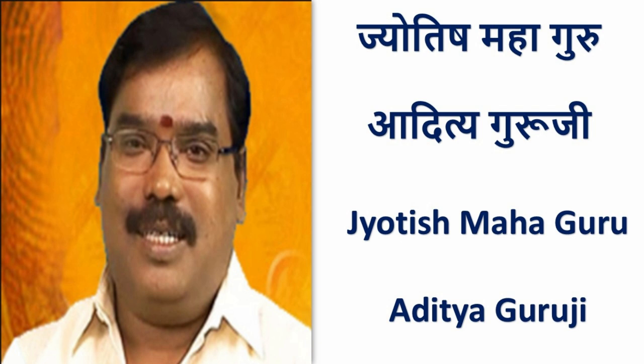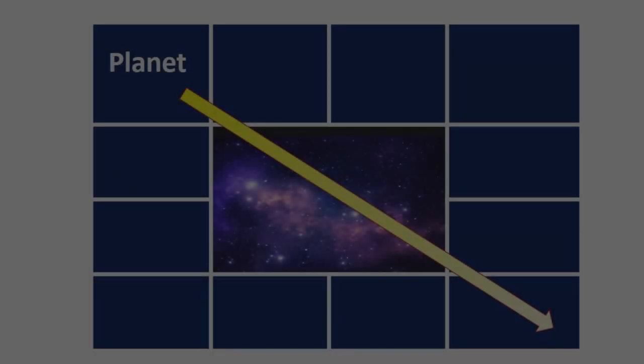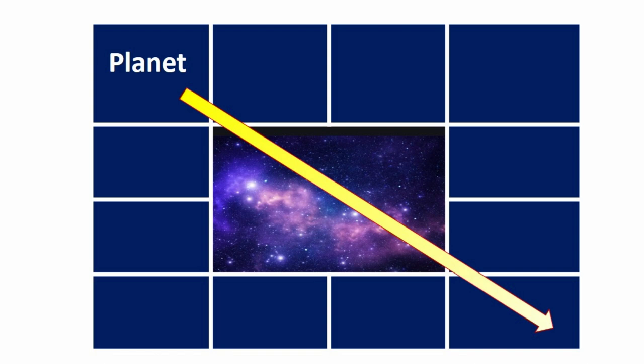The beginners of astrology have these doubts such as how the planets can aspect each other or how a planet can aspect another. The aspect is nothing but the waves of light. It can be reflection of the planet or the emission of light like from sun.